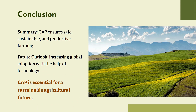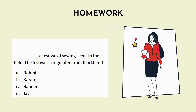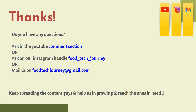One homework for you guys: blank is a festival of sowing seeds in the field. This festival is originated from Jharkhand. Options are given — please comment your answer in the comment section. If you have any doubt, you can ask. If you want to reach us, you can mail us at foodtechjourney@gmail.com. Keep spreading the content guys and help us in growing and reach the ones in need. Thank you very much.